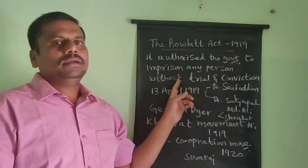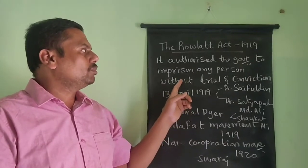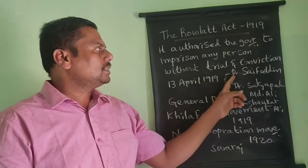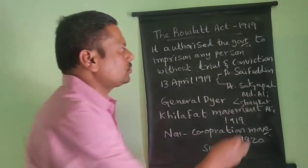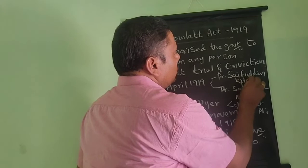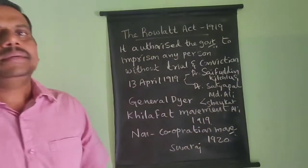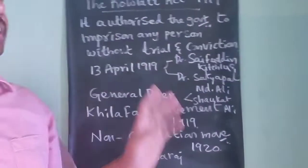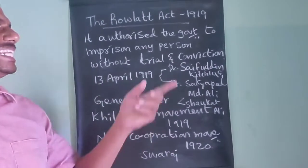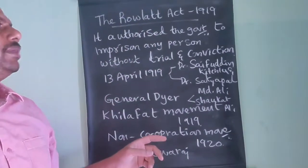Whenever that act was brought, many important leaders protested against it. Some of those leaders were arrested, namely Dr. Saifuddin Kitchlu and Dr. Satyapal — two important people were arrested when they protested against this act and against the British government.